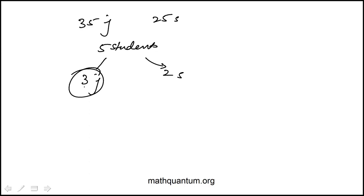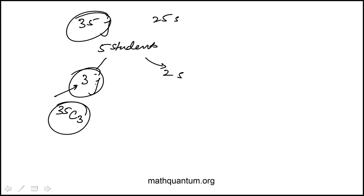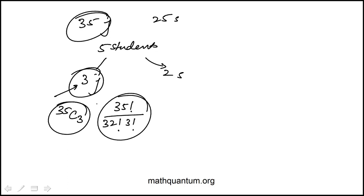First, we have to figure out how many different ways we can select three juniors from a set of 35. This is a combination — 35 choose 3 — where order doesn't matter. So this is 35 factorial over 32 factorial times 3 factorial.